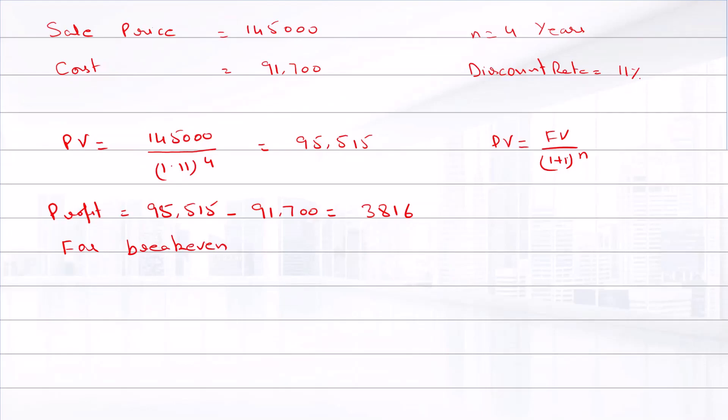The asset value should be equal to $91,700, and that will be equal to the present value of the lump sum sale price.